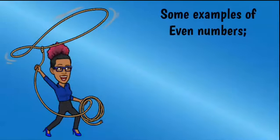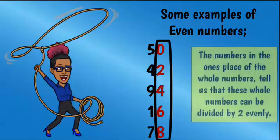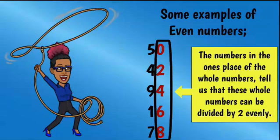Some examples of even numbers: 50, 42, 94, 16, and 78. The numbers 0, 2, 4, 6, and 8 in the ones place of these whole numbers tell us that these whole numbers can be divided by two evenly.